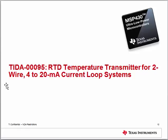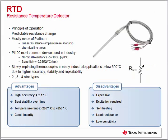The first design is the RTD temperature transmitter for 2-wire 4-20mA current loop systems — a very popular application in industrial automation for process control. RTDs (Resistance Temperature Detectors) offer good linearity, temperature range, long-term stability, and repeatability. The RTD is the measurement device used in establishing international temperature scales.